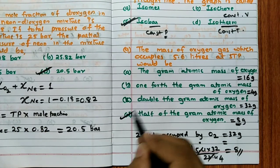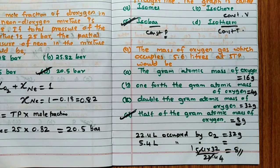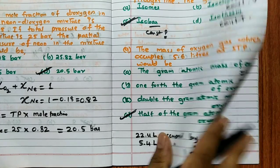8 means half of the gram atomic mass of the oxygen is correct answer. So 9th question, the answer is D.